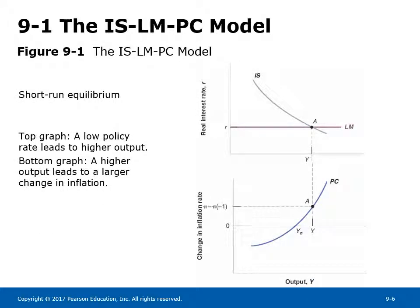Section 9-1: The ISLM-PC Model. Figure 9-1 shows equilibrium in the short run and medium run. Short-run equilibrium is shown in the top graph at point A using the ISLM model — a low policy rate leads to higher output. The bottom graph depicts the upward-sloping Phillips curve with output on the X-axis and change in inflation on the Y-axis. It shows a positive output gap when actual output Y is above natural output Y_N, causing change in inflation to be positive, as seen at point A on the Phillips curve.